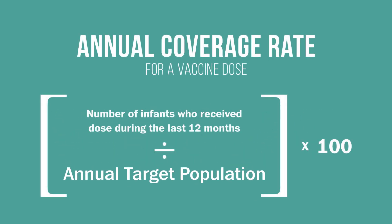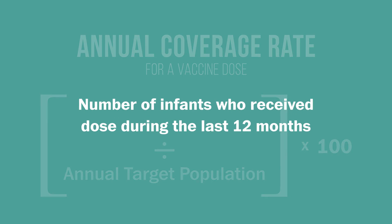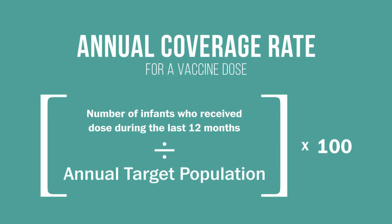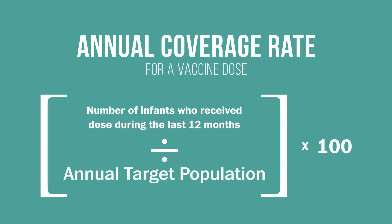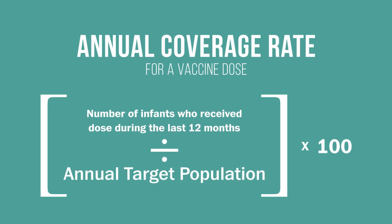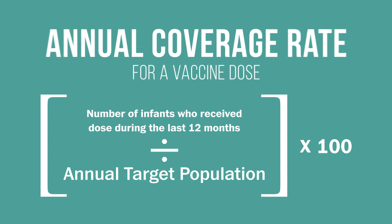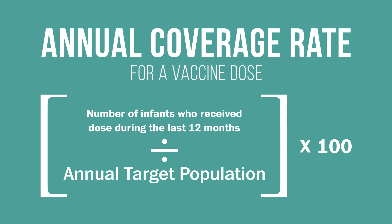Next, for a particular vaccine type or a specific dose of that vaccine, tally the total number of doses you delivered during the preceding 12 months. Now divide the number of doses delivered by the annual target population and multiply that number by 100. The result is the coverage rate for the particular vaccine dose.